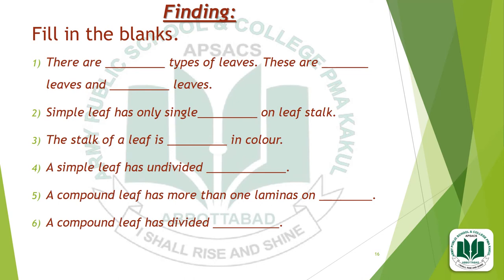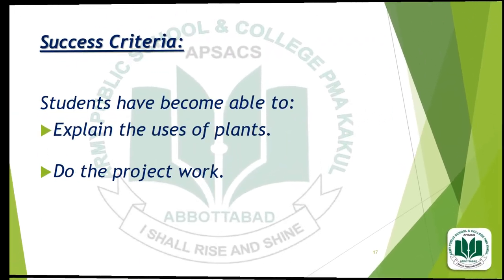After your observation, write your observations and fill in the blanks. There are dash types of leaves. Write the types of leaves. These are dash leaves and dash leaves. Write the names of the leaves. A simple leaf has only a single dash on the leaf stalk. The leaf stalk of a leaf is dash in color. A simple leaf has an undivided dash. A compound leaf has more than one lamina on dash. A compound leaf has a divided dash.